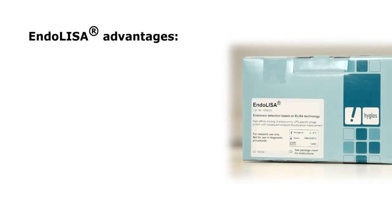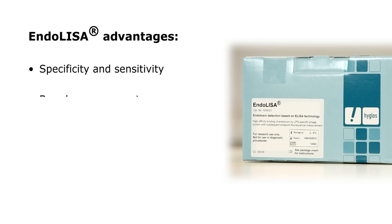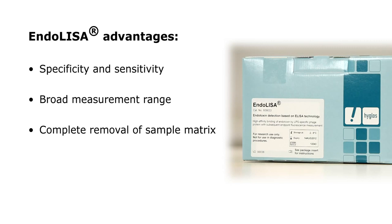Endolysa overcomes the limitations of homogeneous assay methods. It provides excellent endotoxin specificity and sensitivity without dilution of samples, detection of endotoxin concentrations ranging from 0.05 to 500 EU per milliliter, a heterogeneous assay format that enables the complete removal of sample matrix and ensures accurate results, an end point fluorescence assay correlating to all quantitative LAL methods, and a solution free of animal products that provides relief for dwindling horseshoe crab populations.